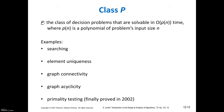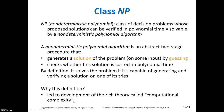Now we'll see what Class P problems are. Class P is the class of decision problems that are solvable in polynomial time — polynomial in the input size m. Examples include searching, element uniqueness, graph connectivity, graph acyclicity, and primality testing.